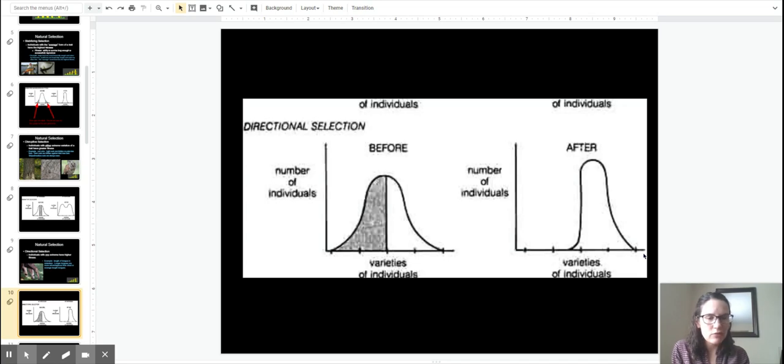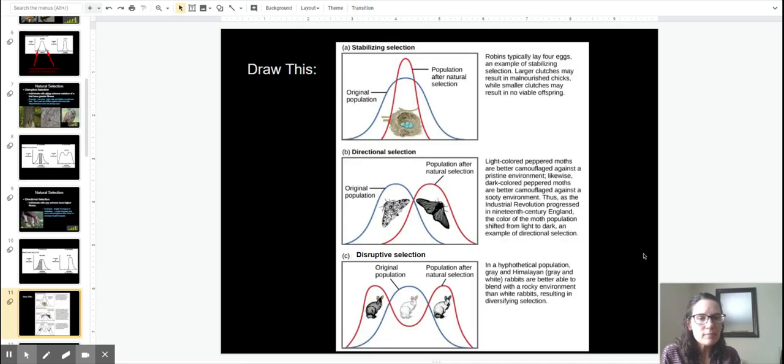I've got one last slide for you here to summarize it all. These are some real world examples not just the ones that I make up and are kind of goofy. These are some examples here of stabilizing and directional and disruptive selection in the real world.